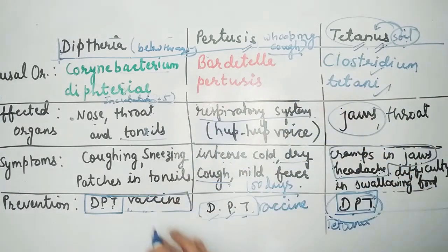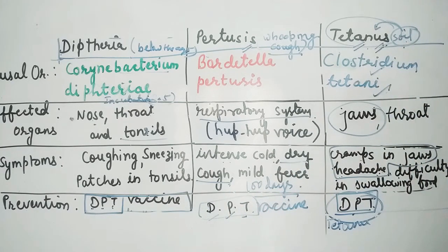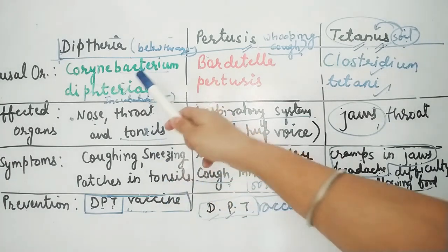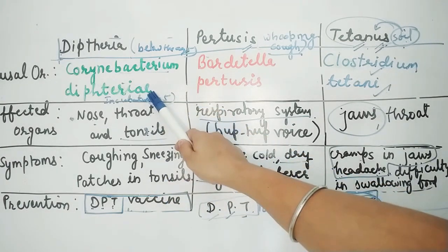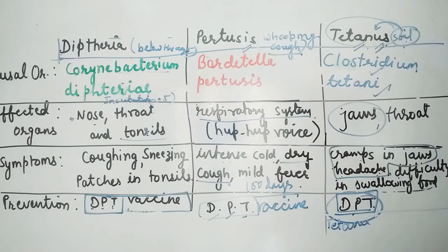The vaccine is DPT — Diphtheria, Pertussis, Tetanus. You should remember these points because in the exam you will be asked about the causal organism, affected organs, symptoms, and prevention. Precautions are the same: the affected person should be isolated and their belongings should be kept separate.